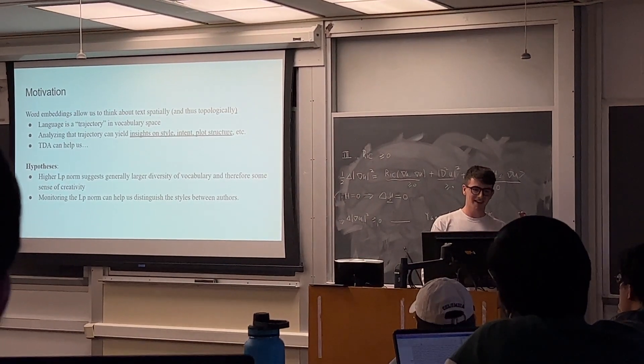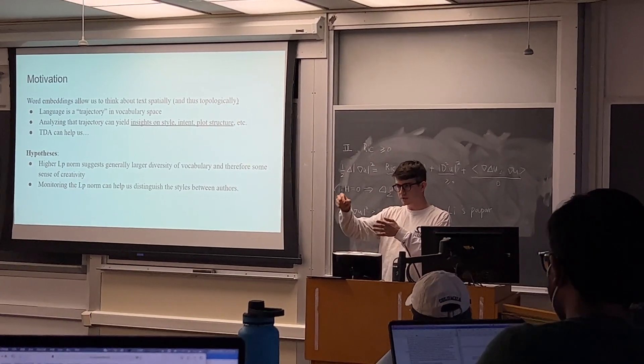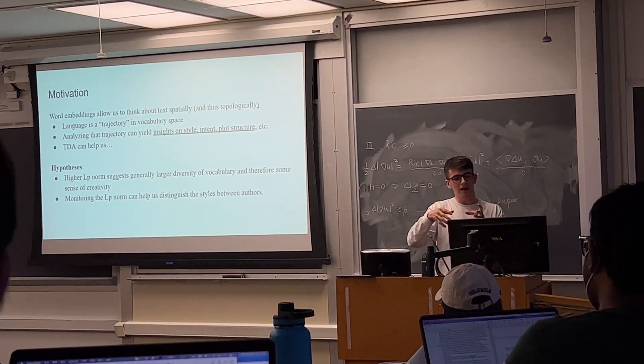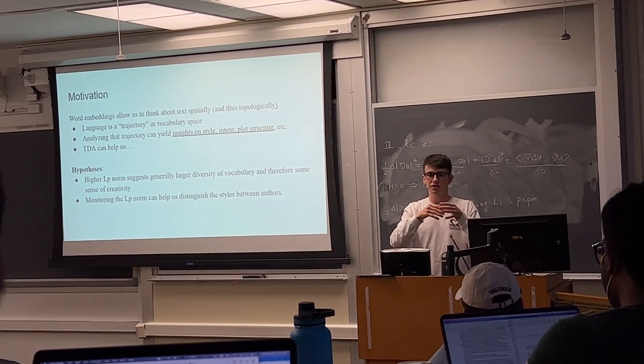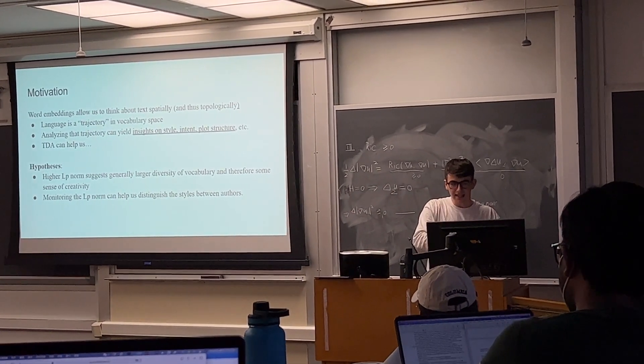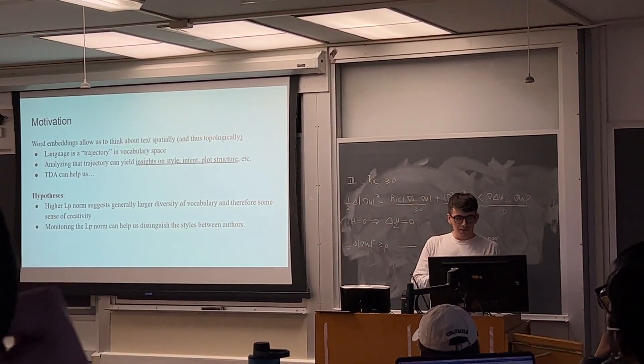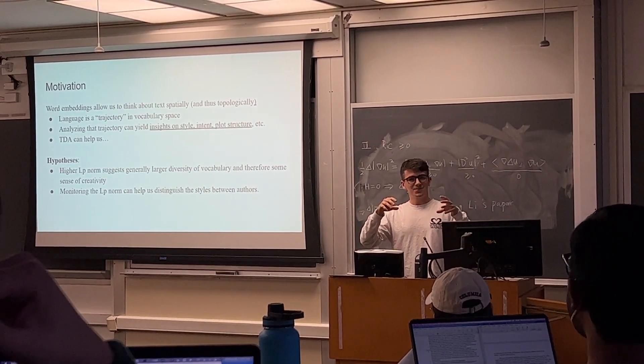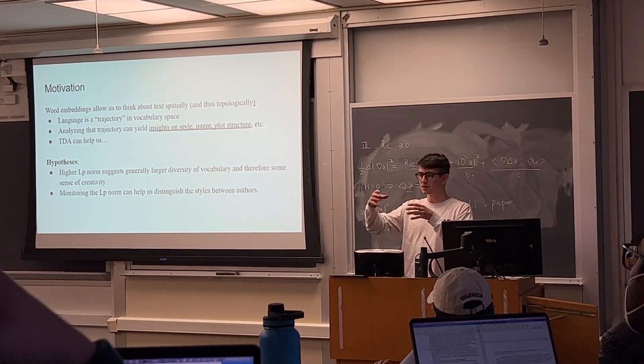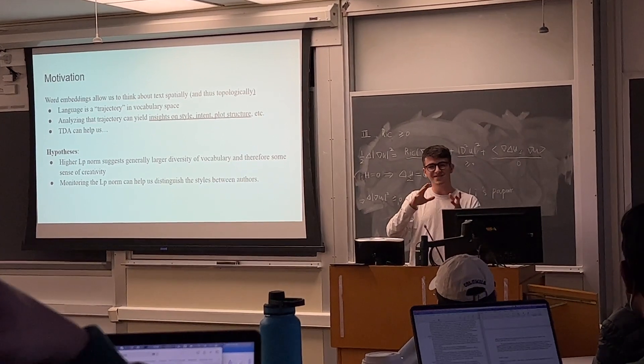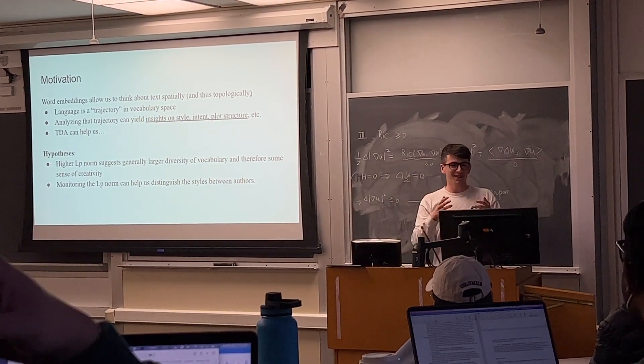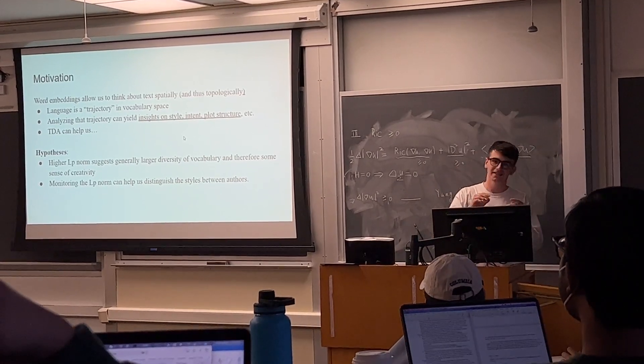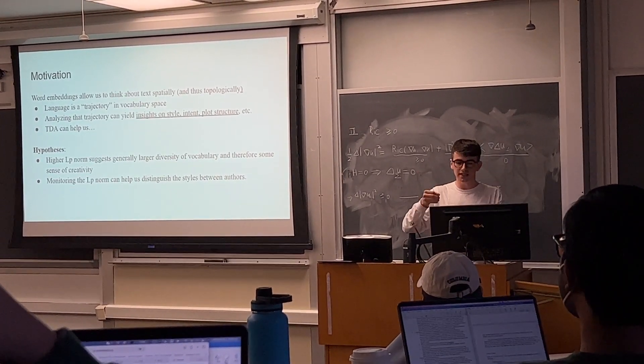The motivation of this project was that word embeddings—if you think about language, language is like a trajectory in high-dimensional word embedding space. So you can analyze that trajectory, perhaps, and you can probably yield insights on the style, the intent, the plot structure of whatever statement you're looking at. My idea was to apply TDA to this area of natural language processing. I had a few hypotheses. One was that a larger norm will perhaps give you a larger diversity of vocabulary or should at least correspond to that, and then it should perhaps correspond to some sense of creativity. These are the assumptions you make in NLP. They're very broad, but you work what you can. Another idea is that monitoring this norm—some more general hypothesis—that you can actually use this to distinguish styles between authors. This was obviously the hypothesis we tested because it's just more tractable in a lot of sense.